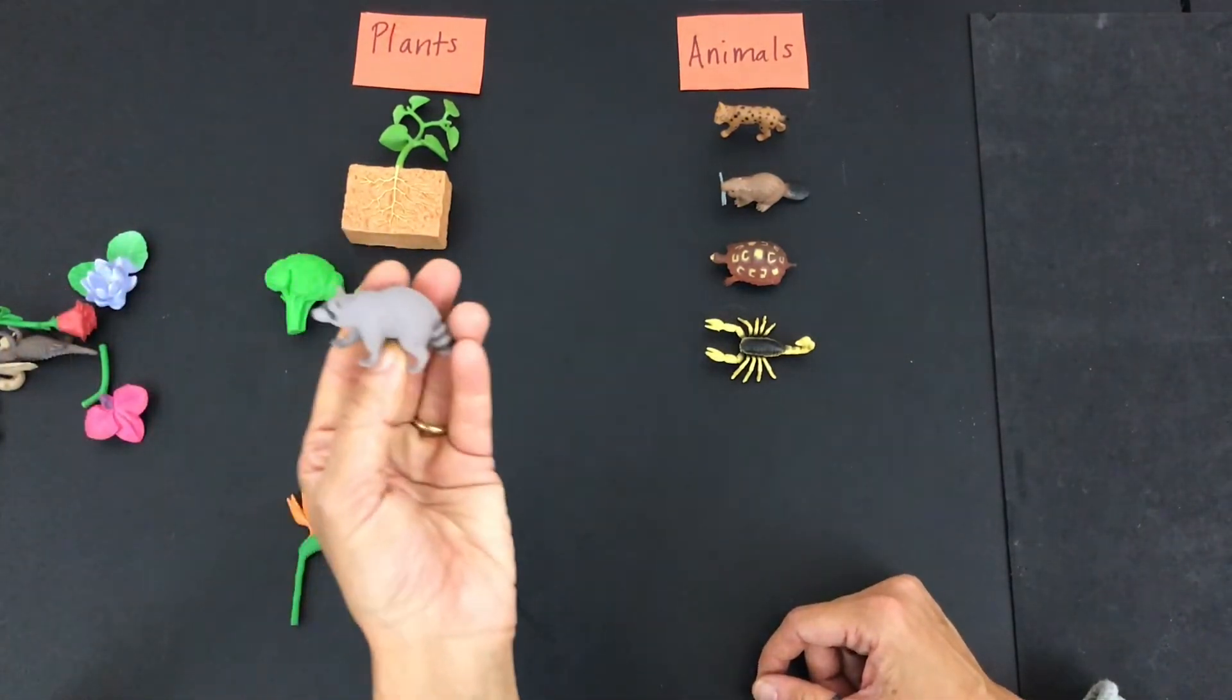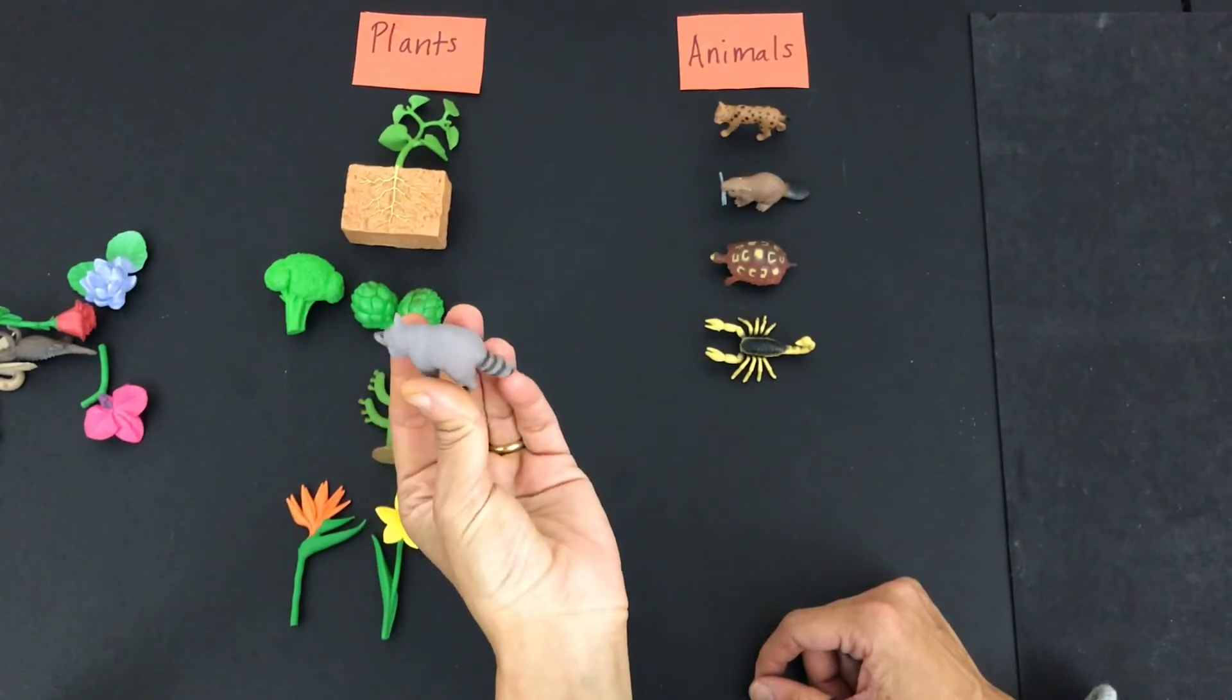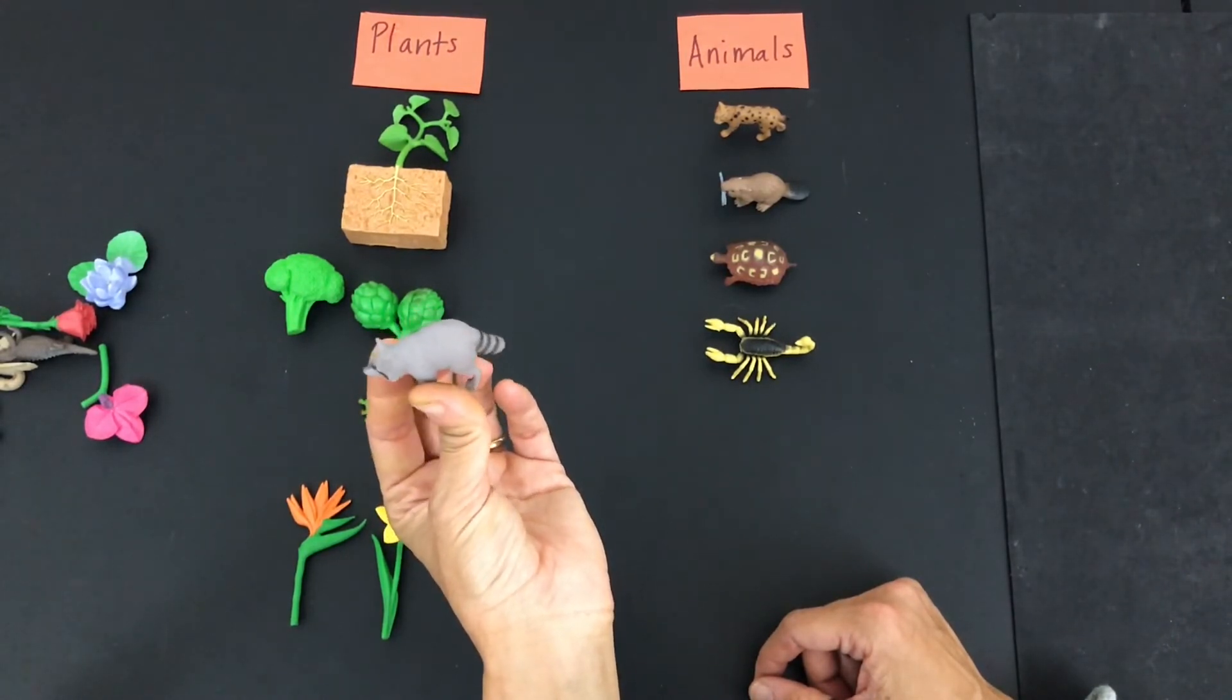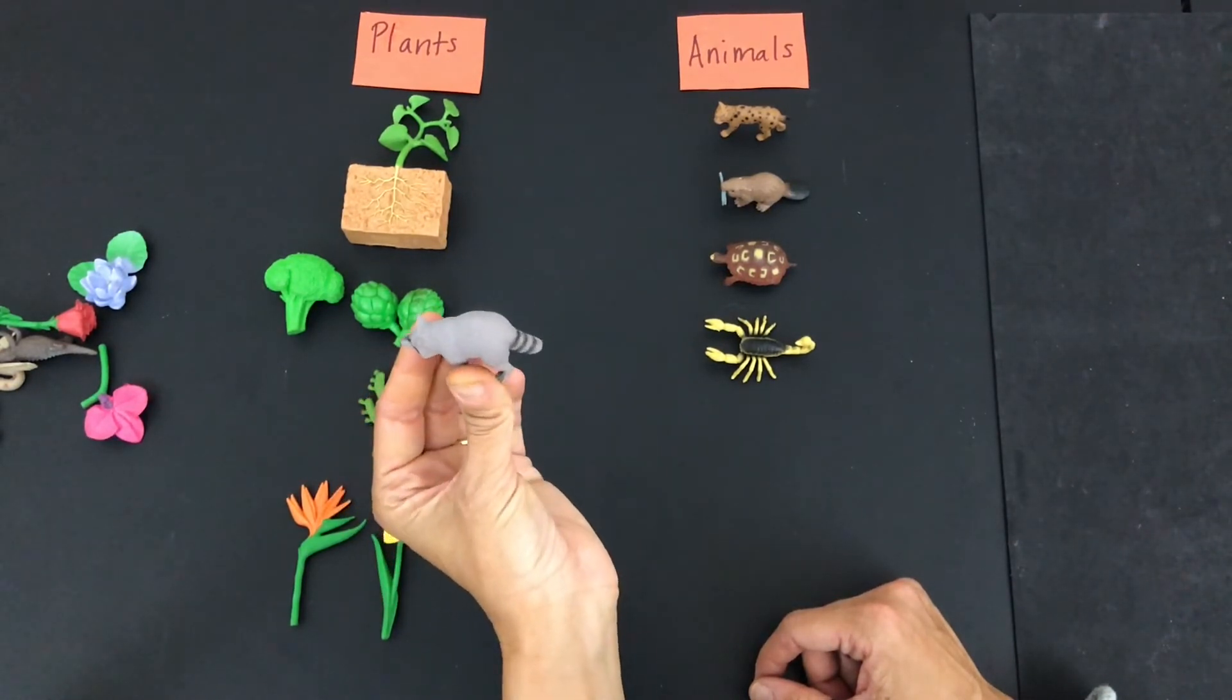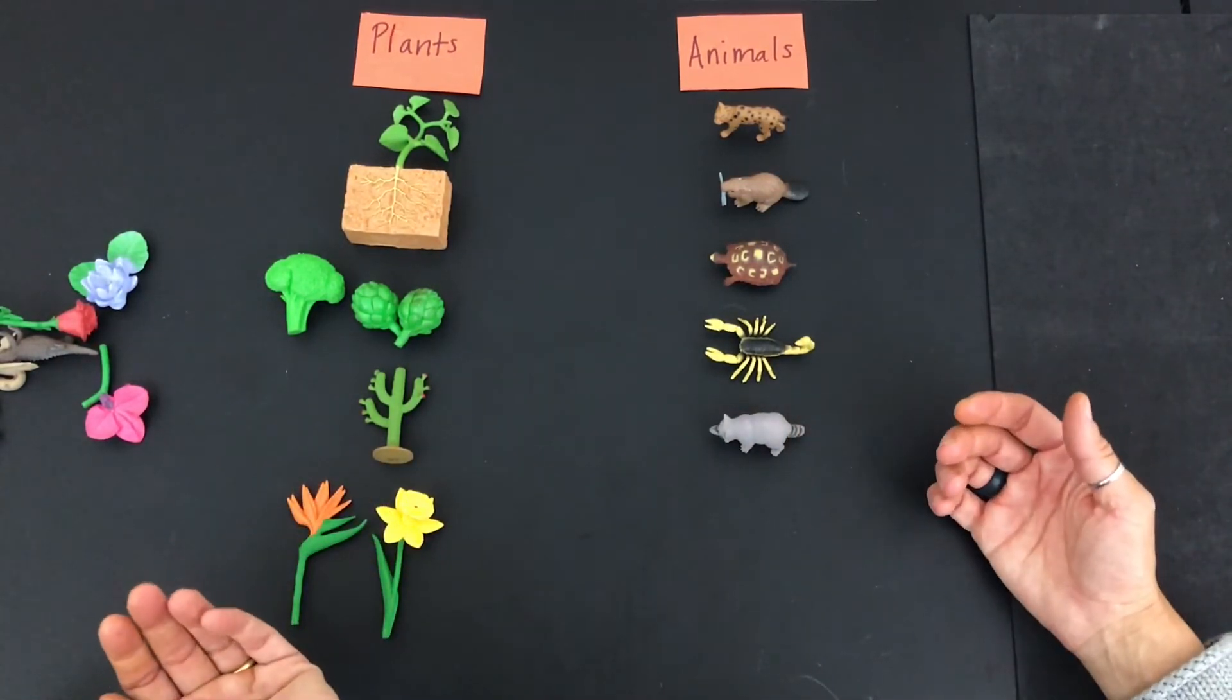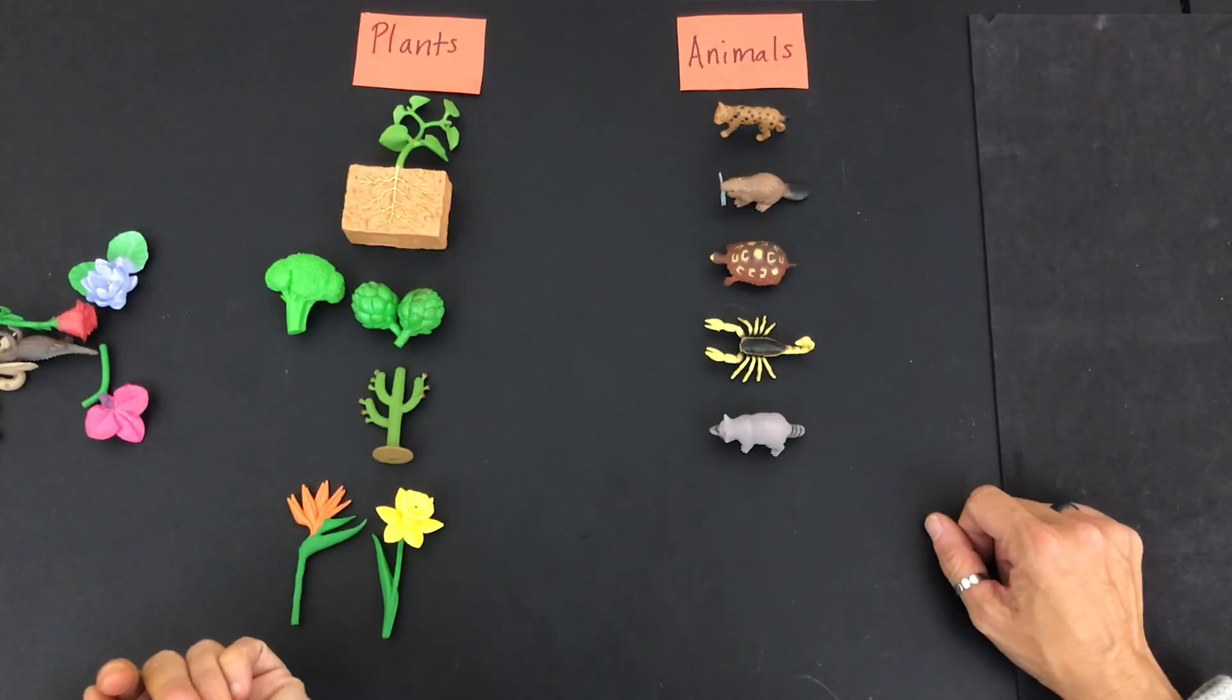What about this? They come around our yard. It's a raccoon. Is a raccoon a plant or an animal? Yeah, it's an animal. It's gotta find its own food. It moves around. It breathes. It has hair, fur, right? Now not all animals do but some of the animals that we have here have fur.